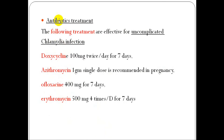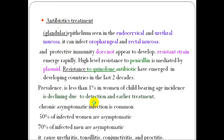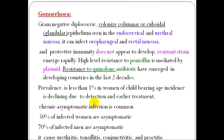Antibiotic treatment: the following treatments are effective for uncomplicated chlamydia infections — doxycycline, azithromycin, ofloxacin, and erythromycin. These are commonly used in chlamydia infections.